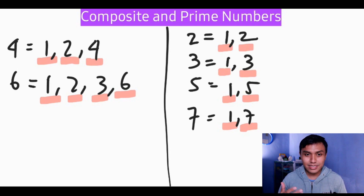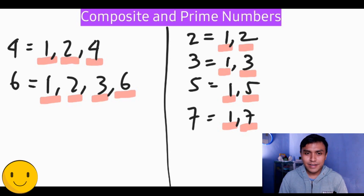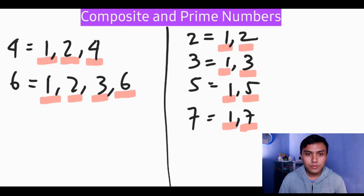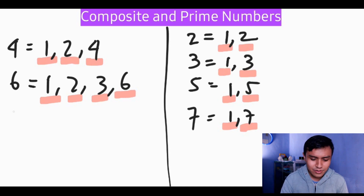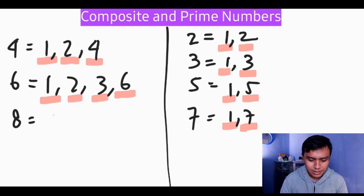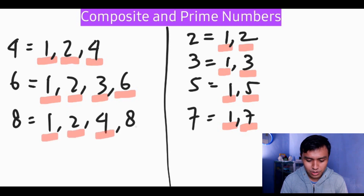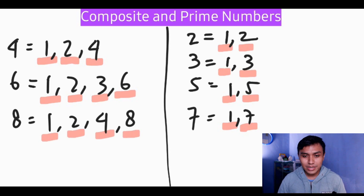After knowing the definitions, it becomes easy to determine composite and prime numbers. The factors of eight are one, two, four, and eight — more than two factors, so we put it directly in the composite table: one, two, four, and eight, giving us four factors total.